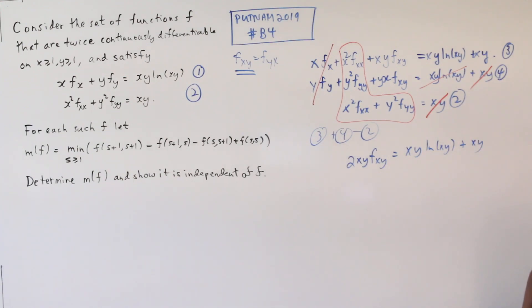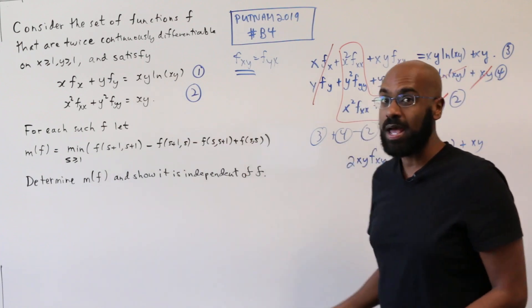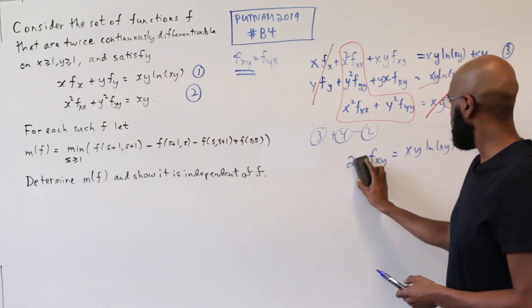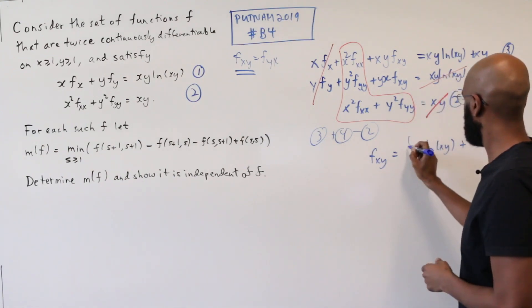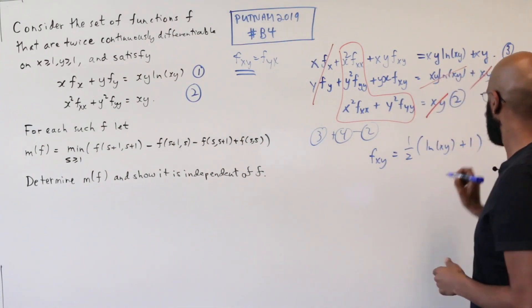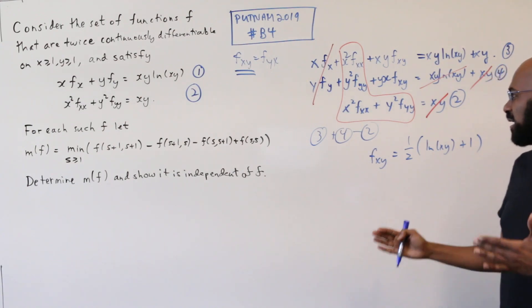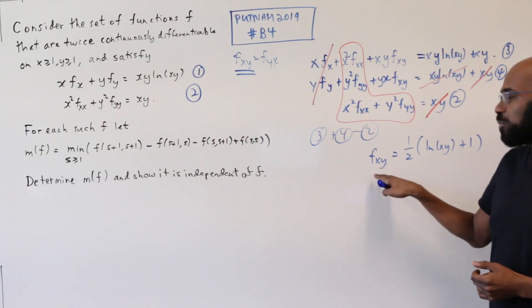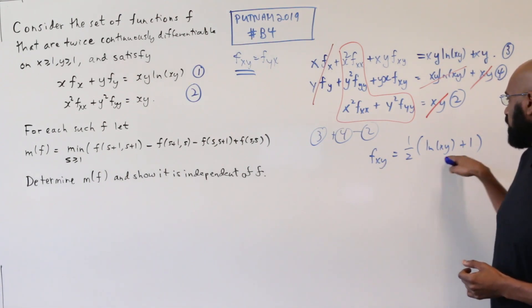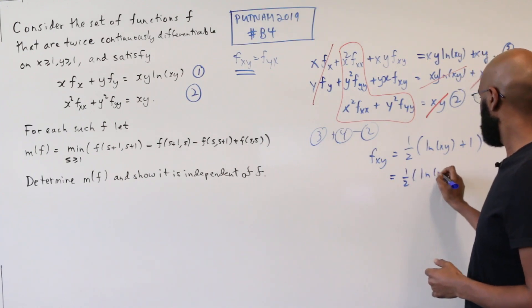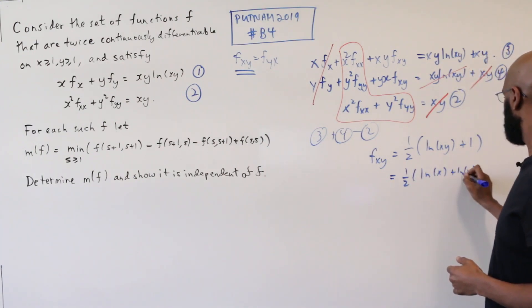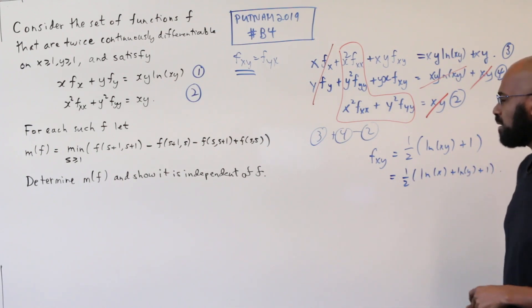Great, so one of the things we're able to do by putting things in terms of the second derivatives is now if we divide by xy, which we can do because x and y are both greater than or equal to 1, we get that fxy is a half of this quantity right here. Excellent. So at least we're at a point where we have the mixed partial fxy as an explicit expression in terms of x and y. It's a half of ln x plus ln of y plus 1.